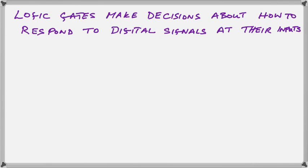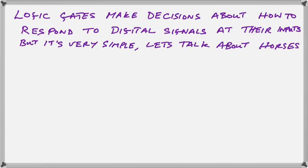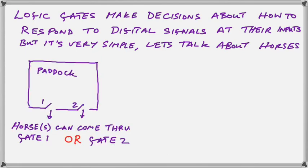Now logic gates make very basic decisions about how to respond to the digital signals at their inputs. Let's talk about horses instead. I know this may sound strange but the idea becomes very simple when we consider horses in a paddock. Here we have a paddock with two gates and the horses can come out of either gate. This is an example of an OR operation.